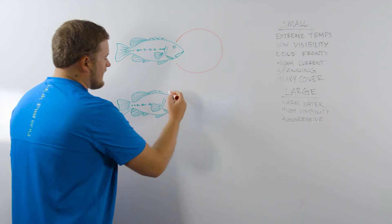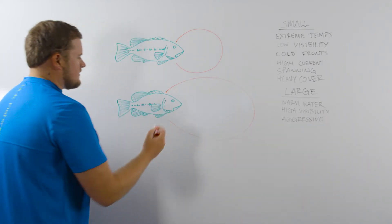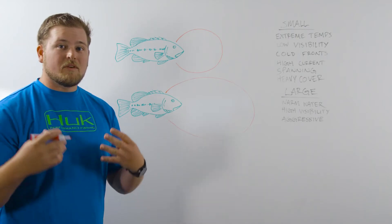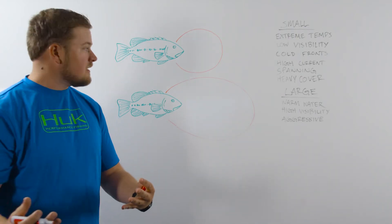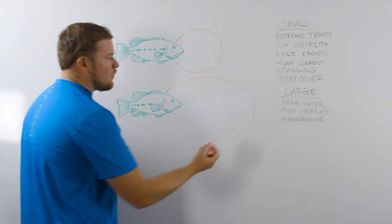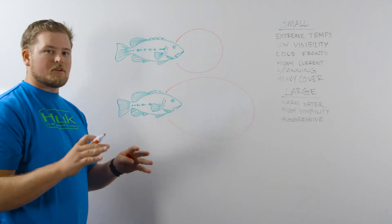Now, next we've got a larger strike zone. A larger strike zone means that the fish are more aggressive, they're moving greater distances to attack bait. And that could be because the conditions are prime, warm water, perfect water temperature.